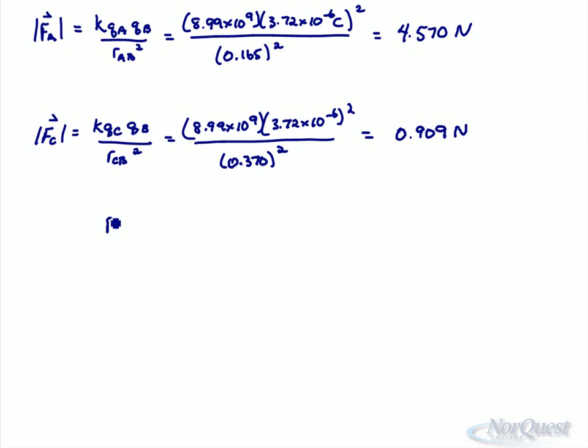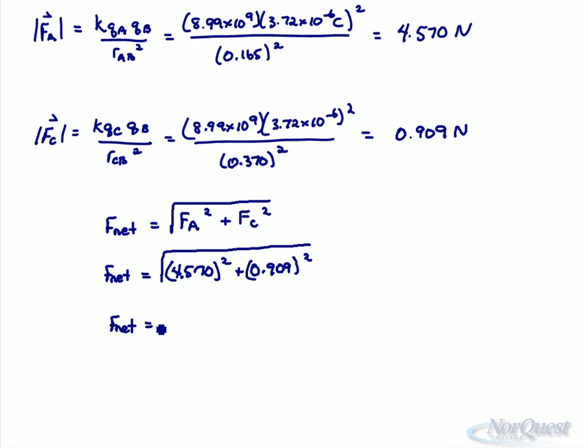Now what we want to do is we want to find the net force. So this will be equal to force of A squared plus force of C squared take the square root. So the net force will equal to 4.570 squared plus 0.909 squared. Take the square root of that result, and you should get 4.66 newtons.